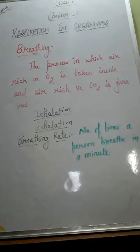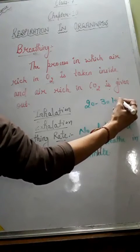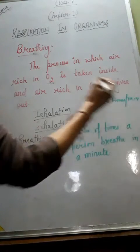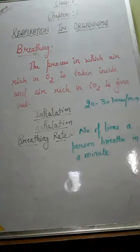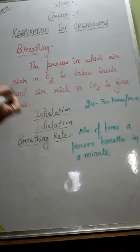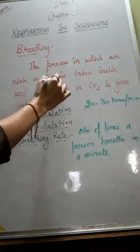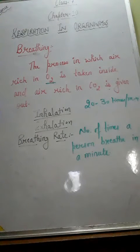Breathing rate is somewhat faster in women than in men, and in children it is higher — 20 to 30 times per minute — than in adults. Breathing rate is slowest while sleeping. But when you do heavy exercise like running or playing, your breathing rate increases. It all depends on how much oxygen your body requires.